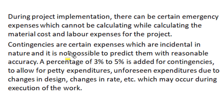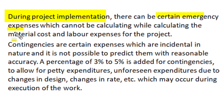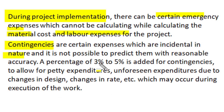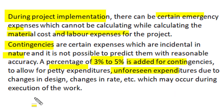During project implementation, there can be certain unexpected emergency expenses which cannot be calculated while we estimate for material cost and labor charges. Such unexpected emergency expenses are called contingencies — they are expenses which are incidental in nature and one cannot predict them beforehand with reasonable accuracy. So a percentage of 3 to 5 percent of material and labor cost is added for contingency charges to allow for petty or unforeseen expenditure due to changes in design.